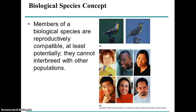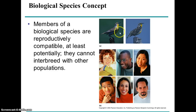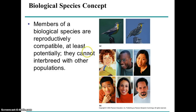So how do we define a species? The primary way is what's known as the biological species concept, in which we define members of a species as those individuals who have the ability or the potential to interbreed with each other. Looking at these two birds, for example, we see they look quite similar, but they're actually different species because they do not interbreed with each other at all. Whereas people can look quite different but can all potentially interbreed with each other.